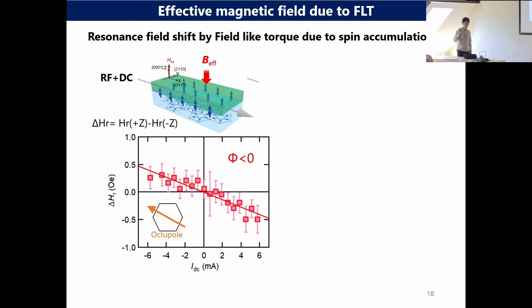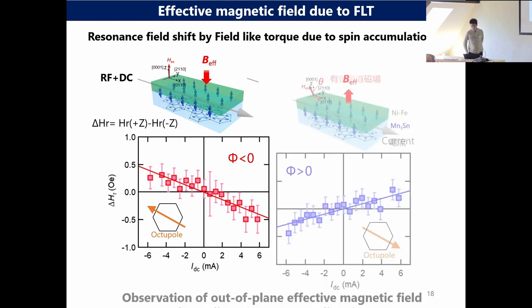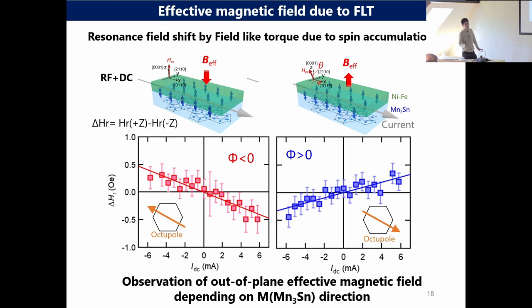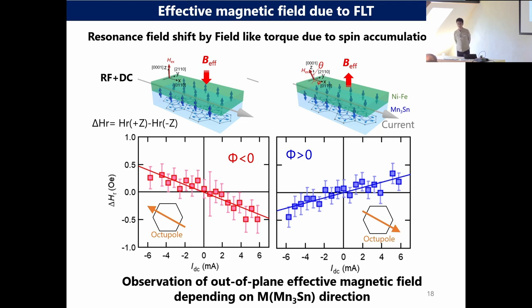This is the experimental result. The x-axis is the DC current, and the y-axis is the difference of the resonance field between plus Z and minus Z configurations. We observe a linear variation by changing the DC current amplitude. It means when we apply DC current in these materials, we observe an out-of-plane effective magnetic field — and in this case it's a negative field, while in the opposite magnetization case it's a positive magnetic field. So when DC current is applied, an out-of-plane spin component is generated.